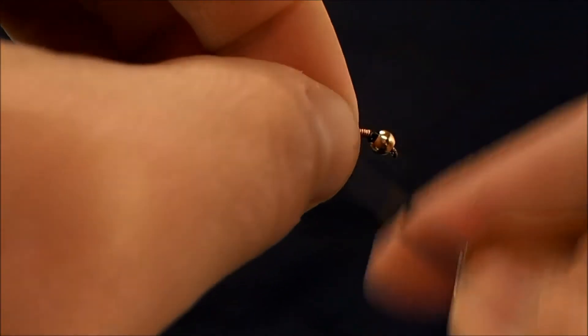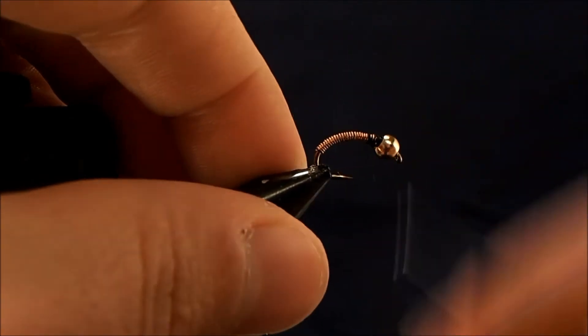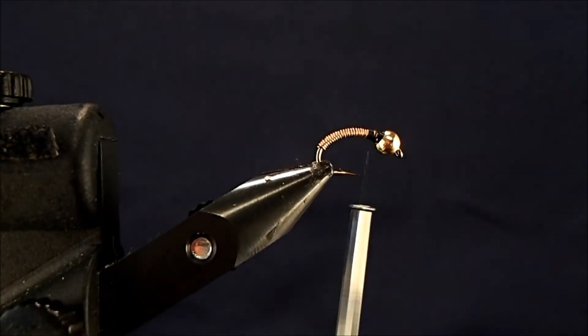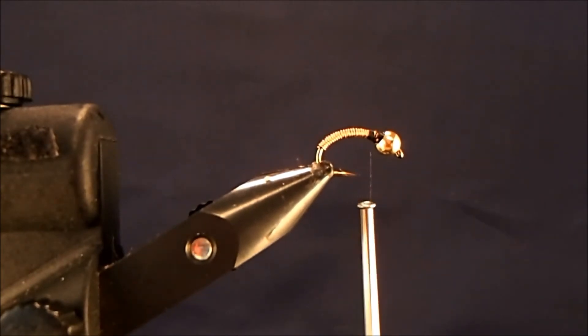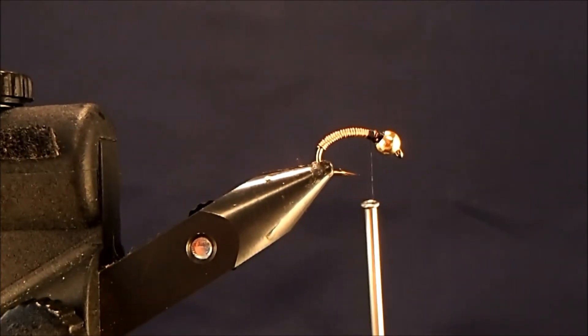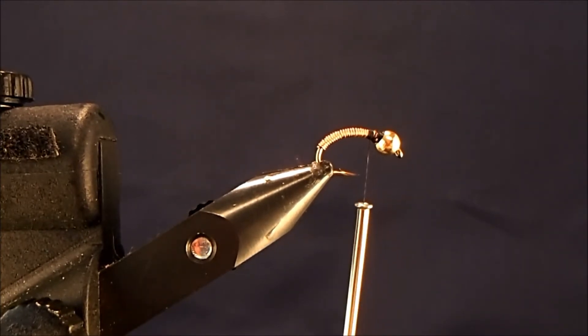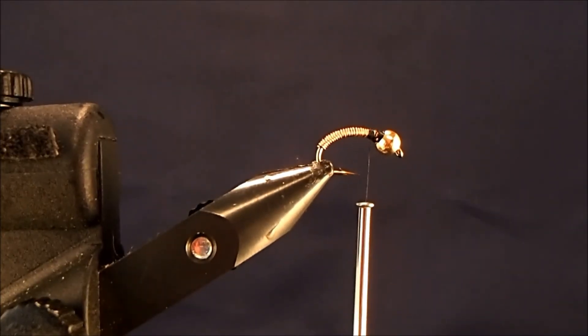Take a couple wraps over and a couple wraps back. For the thorax of this fly, I use peacock curl. I'm going to get maybe two or three strands of peacock curl here and clean up the ends to give me a good tie-in point.